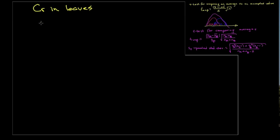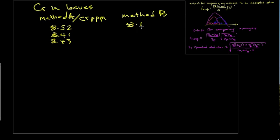We take a set of peach leaves and grind them up thoroughly. Divide the mass in two and give it to two different labs, one applying method A and one applying method B. So we're going to determine the amount of chromium in parts per million. And in method A we get numbers that look something like this. Method B gives us some slightly different values.